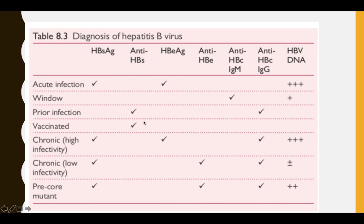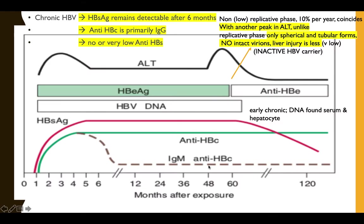This slide is very important. In acute infection: surface antigen positive, E antigen positive. In the window period: only anti-core IgM is positive. In a vaccinated individual: only anti-HBs is positive, from the immunoglobulin response. In chronic infection with high infectivity: E antigen is positive. In chronic infection with low infectivity: E antigen is absent but surface antigen is present. In replicative chronic: E antigen present, surface antigen present, and anti-core IgG positive.